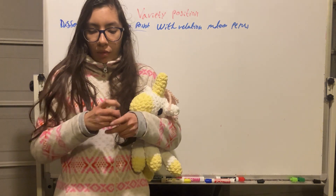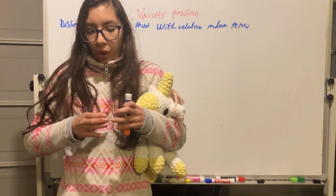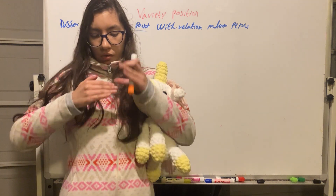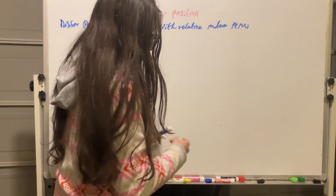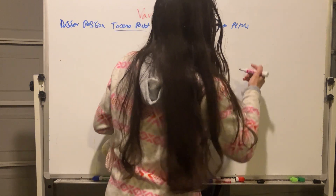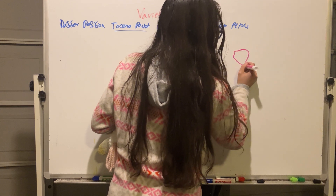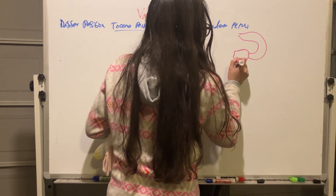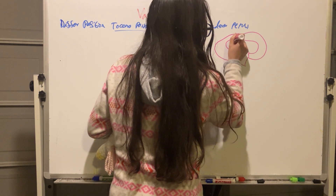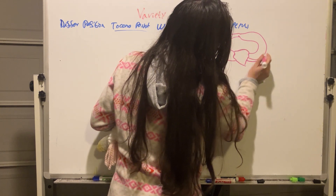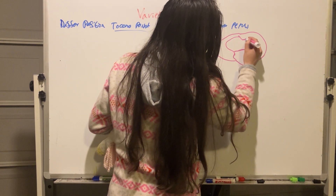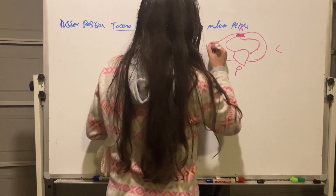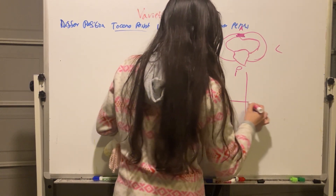Let's draw the maternal pelvis. This is the maternal pelvis — anterior is at the top, posterior is at the bottom. This is right and this is left. Here we have the sacrum, the iliac bone, and the symphysis of the pelvis. This is the same plane we will be working with.